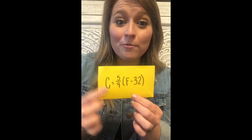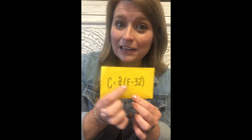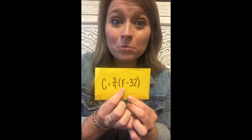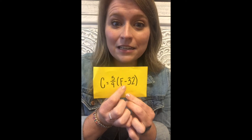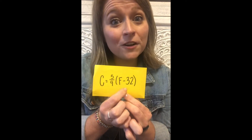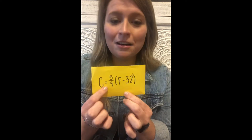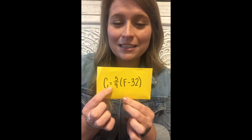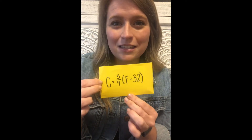The next song is going to help us with going from Fahrenheit to Celsius. You plug in your number for Fahrenheit, subtract 32 first, then multiply by 5 ninths. That'll give you Celsius.